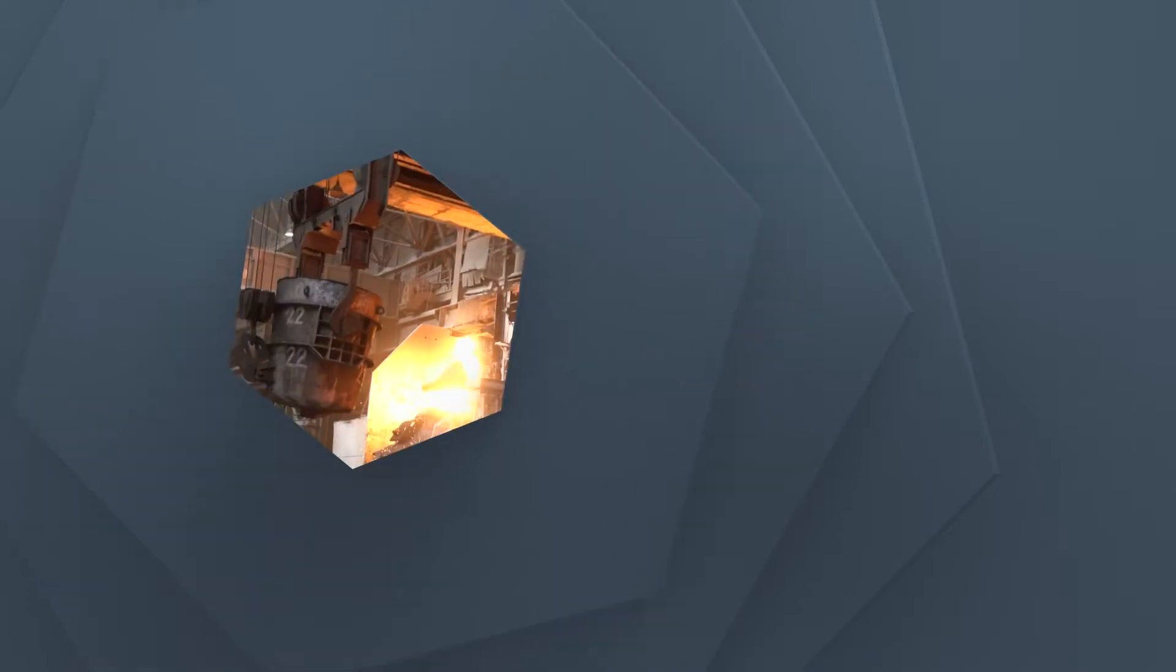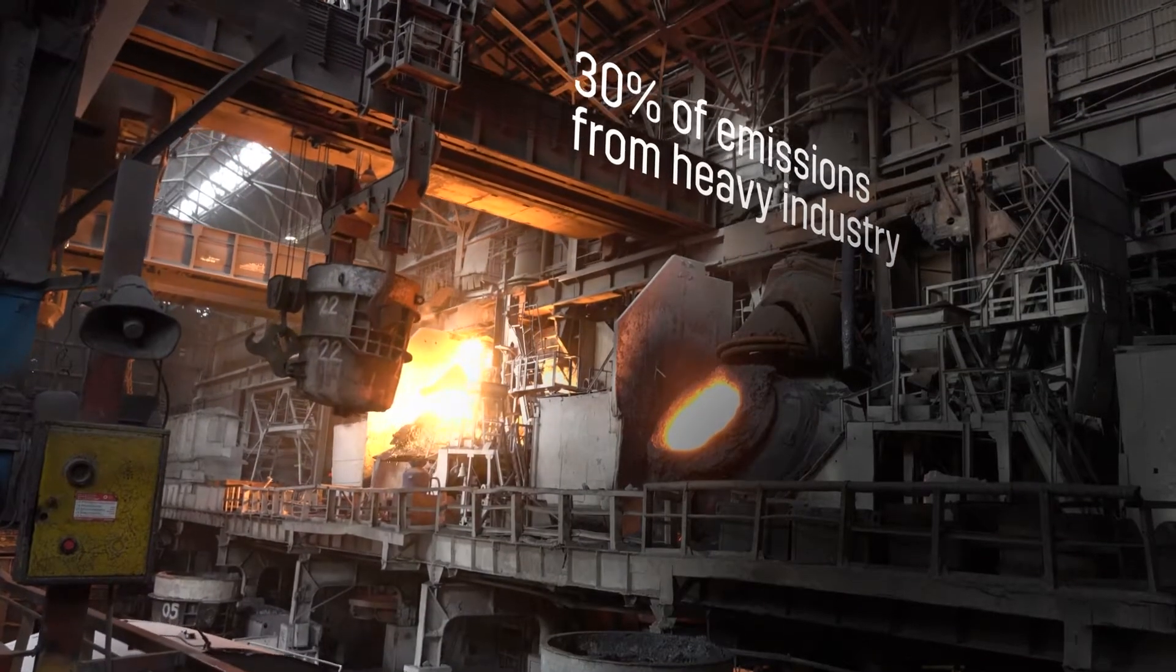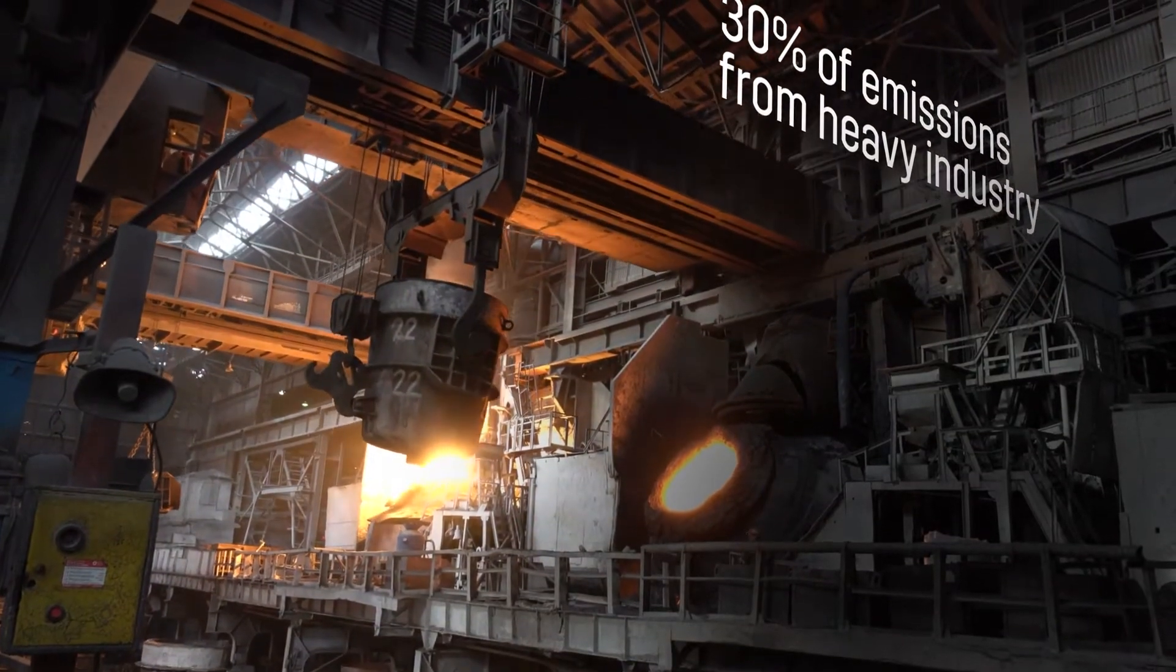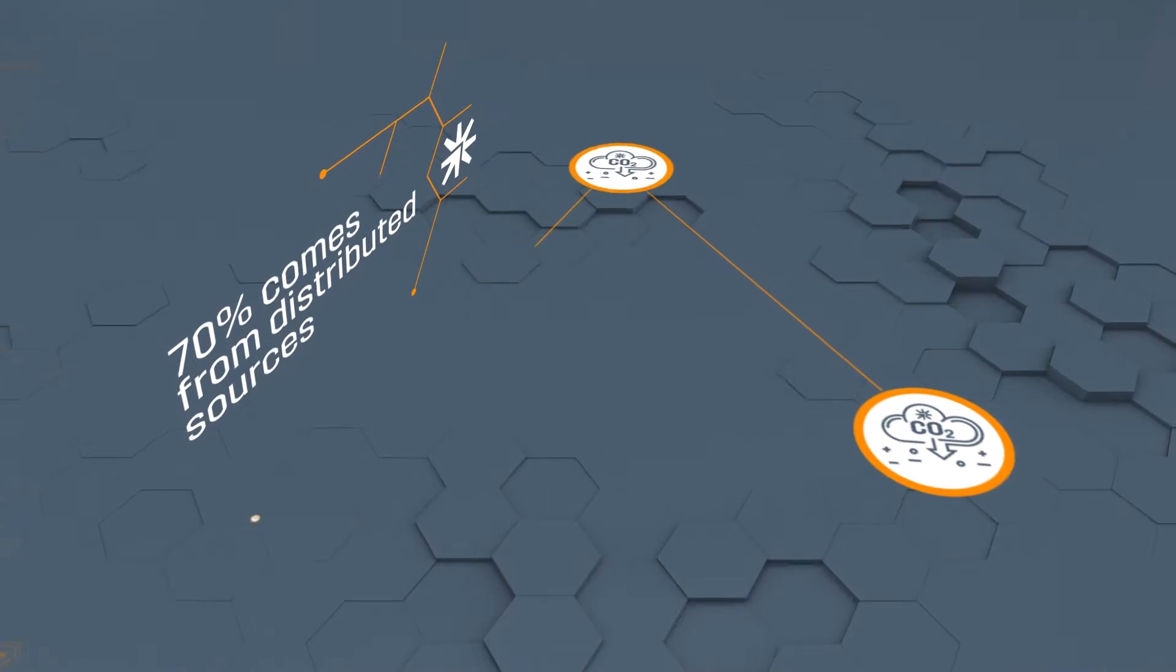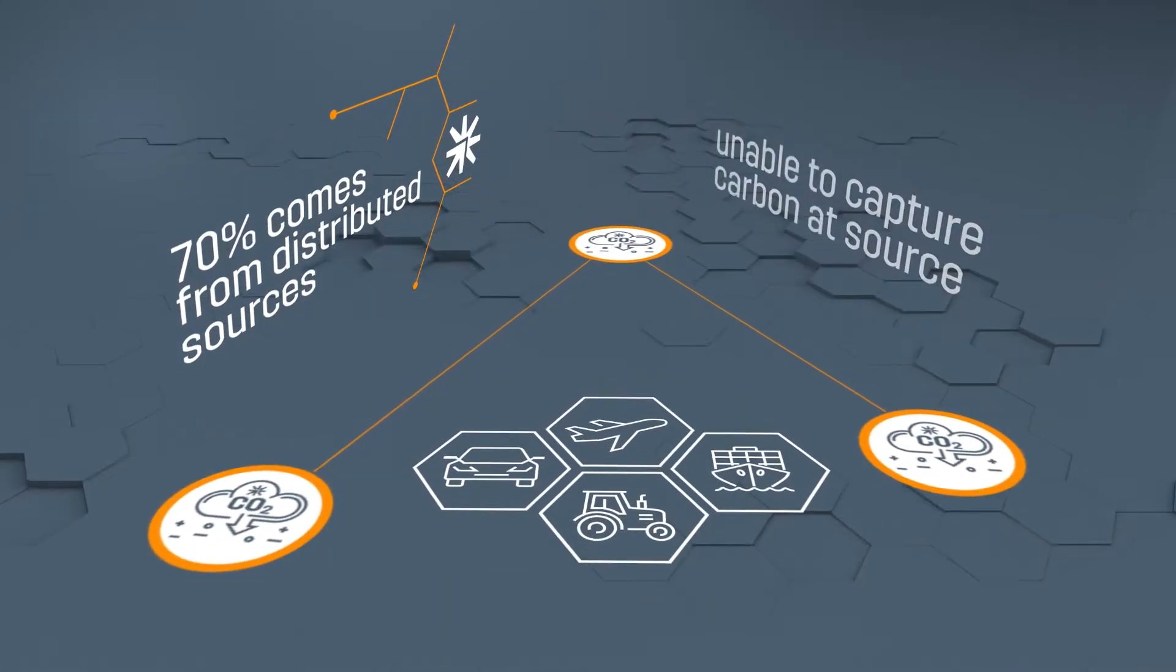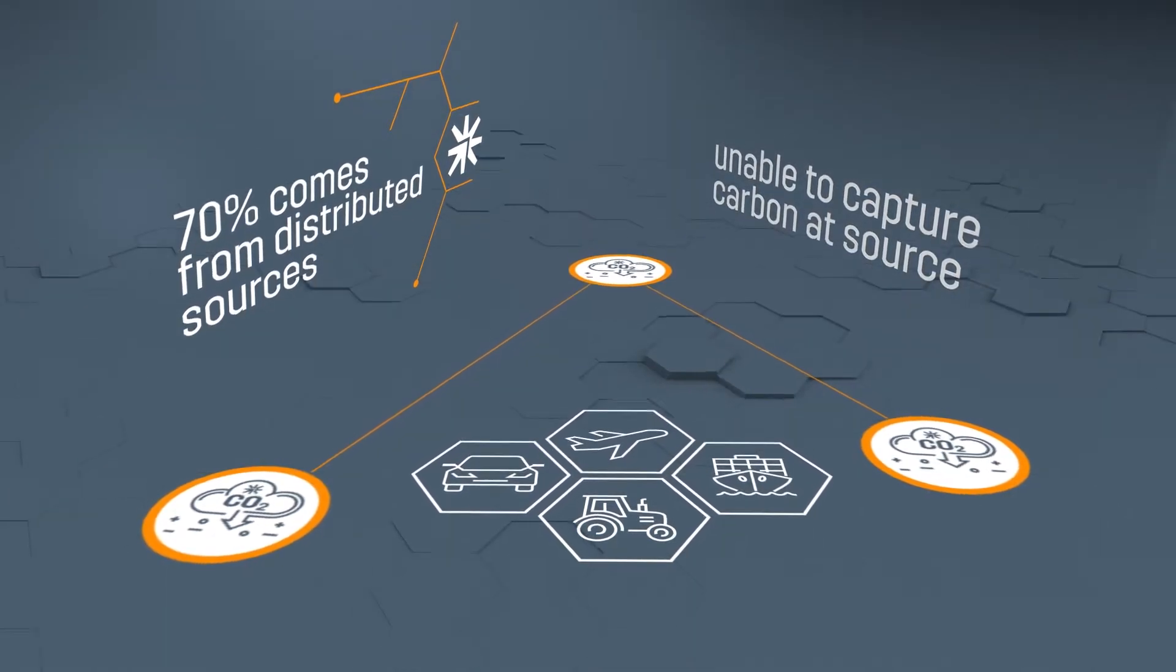These techniques work well for heavy industry like iron and steel, but these industries only account for 30% of total emissions. The other 70% comes from distributed sources like cars, aviation, shipping and agriculture, where it is impossible to capture carbon at source.